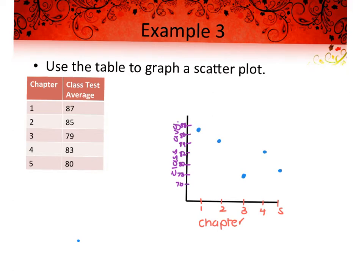A wrong statement would be that there's a positive correlation — that's clearly not happening — or that the chapters get easier. What do you notice about chapter three? There's a severe dip there, so you could assume chapter three is the hardest, or that something happened around that time. There are a lot of things you can infer. That kind of analysis — what you can determine from your graph — is what standardized tests will question you on, not just graphing it.